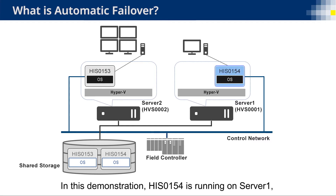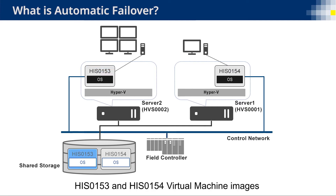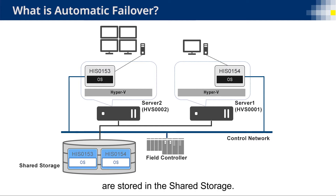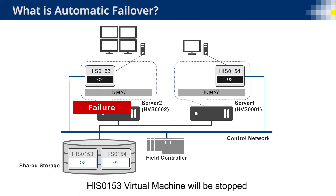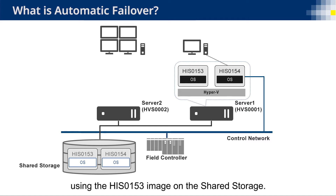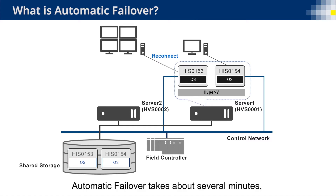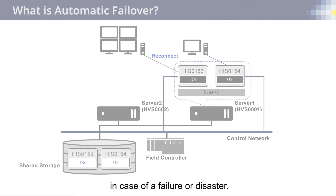In this demonstration, HIS-0154 is running on Server 1 and HIS-0153 is running on Server 2. HIS-0153 and HIS-0154 virtual machine images are stored in the shared storage. If something happens to Server 2 and it stops, HIS-0153 will be stopped and restarted on Server 1 automatically using the HIS-0153 image on the shared storage. Automatic failover takes about several minutes, whereas recovery in a conventional physical environment takes about one day.